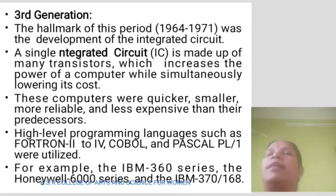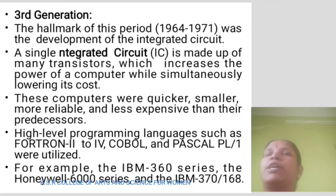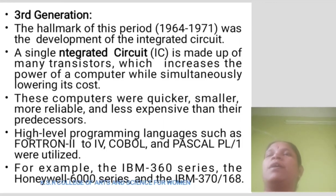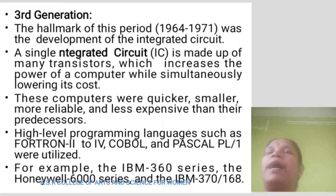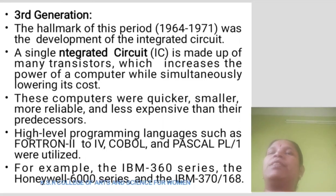Third Generation. The hallmark of this period, 1964 to 1971, was the development of the integrated circuit. A single integrated circuit is made up of many transistors, which increased the power of computers while simultaneously lowering cost. These computers were quicker, smaller, more reliable, and less expensive than their predecessors. High level programming languages such as FORTRAN, COBOL, and PASCAL were utilized. For example, the IBM 360 series, the Honeywell 6000 series, and the IBM 370/168.